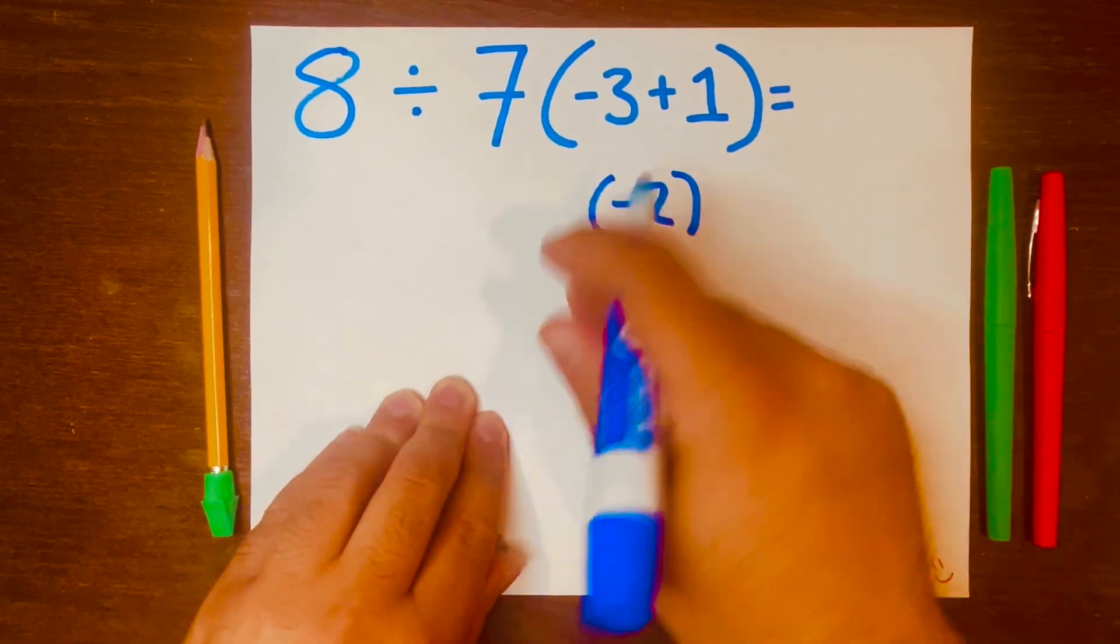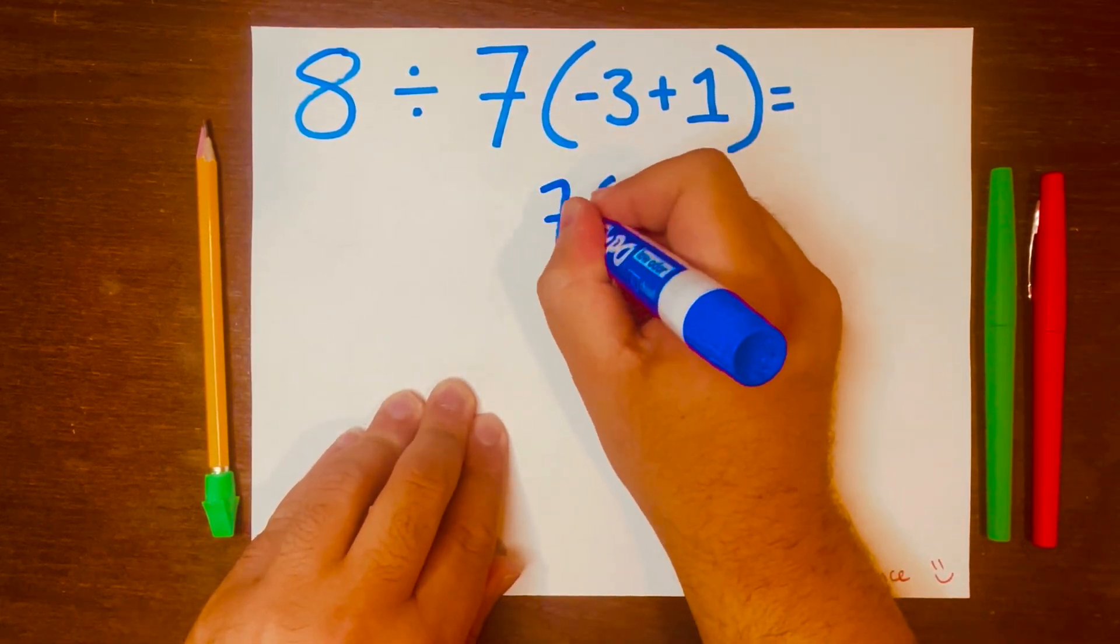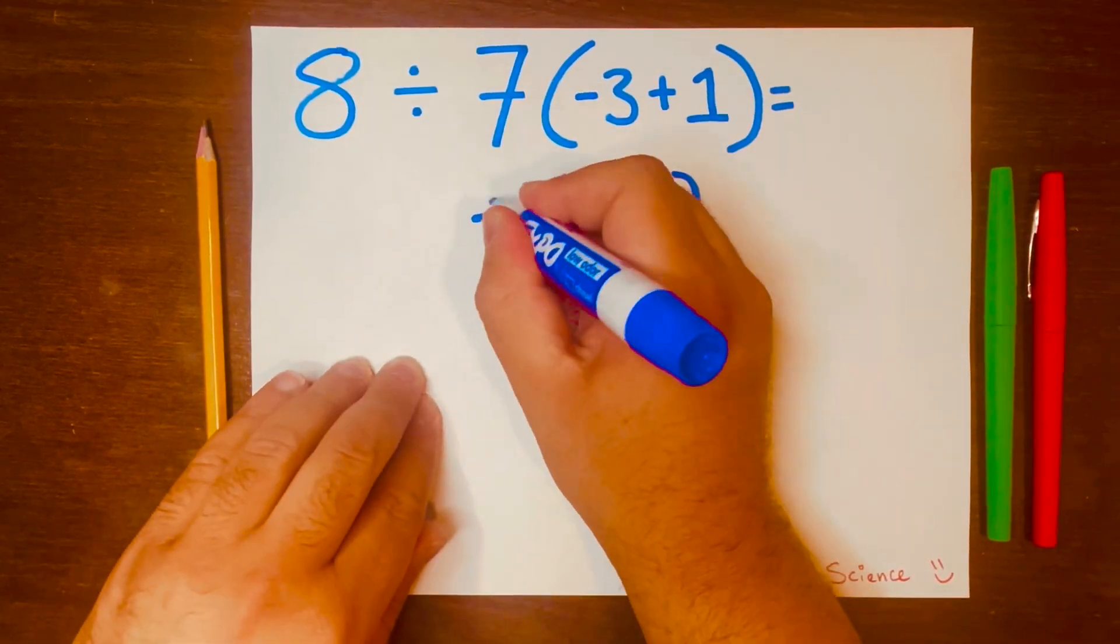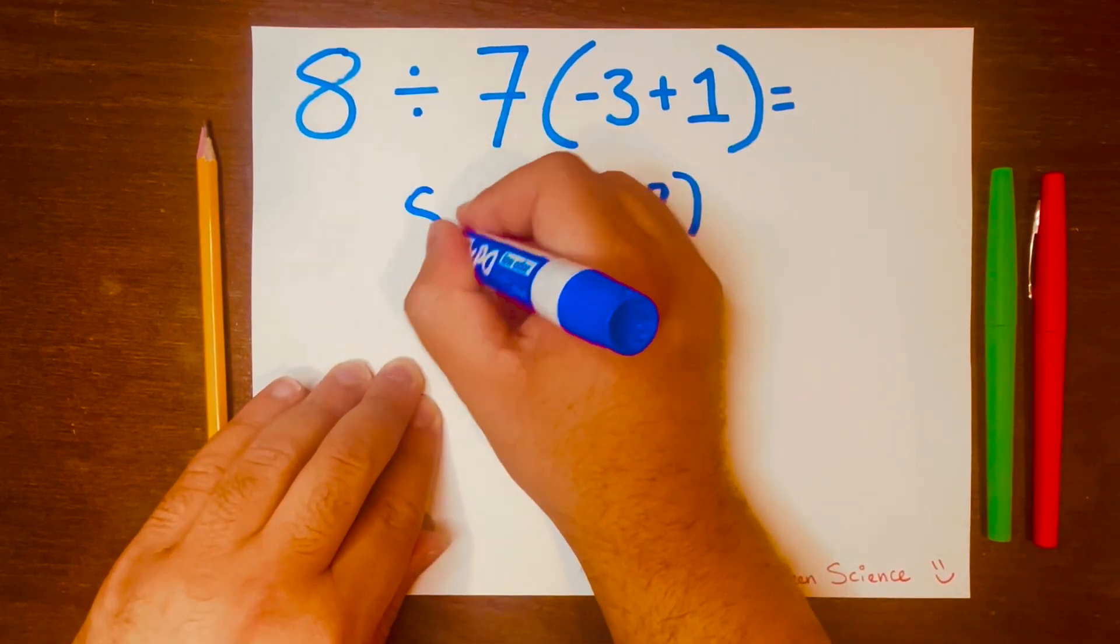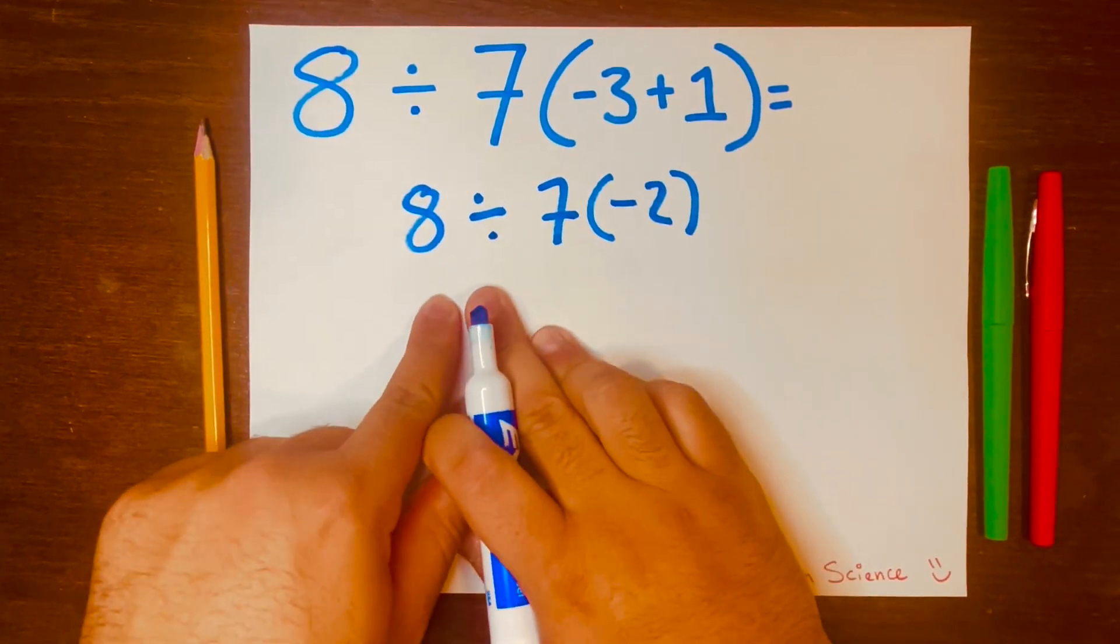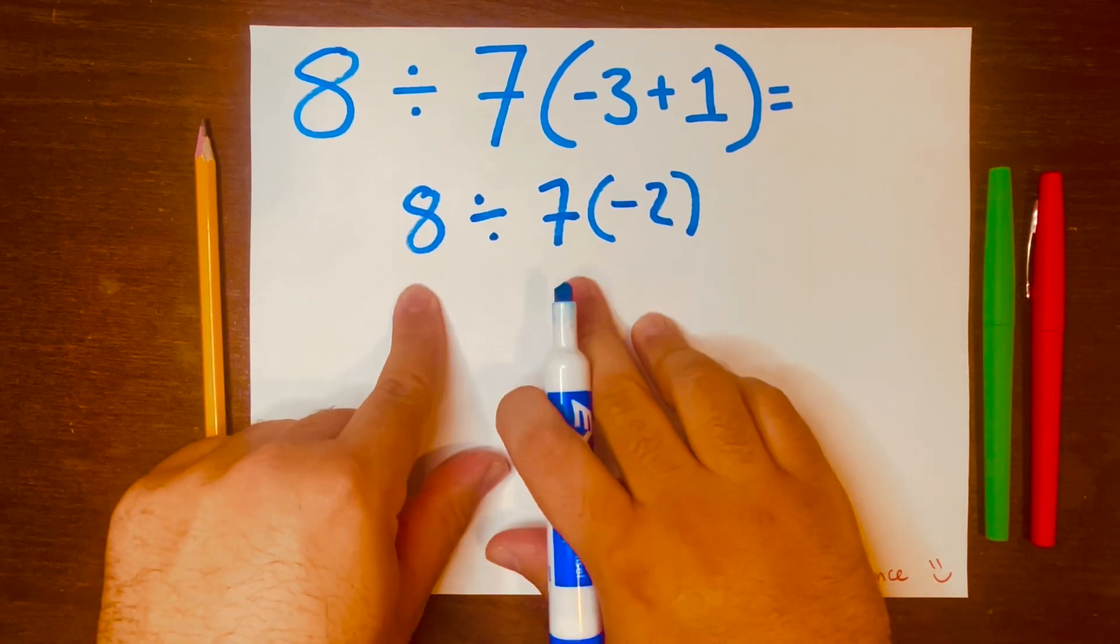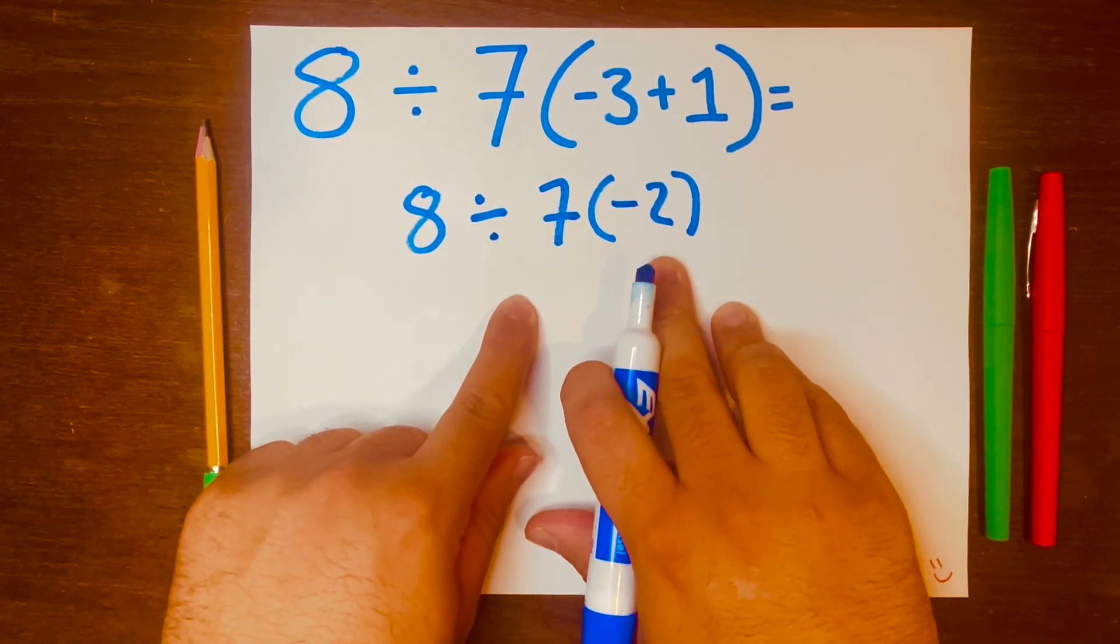Then I'll bring down the 7, the division symbol down, and then the 8 down. Now we have 8 divided by 7 times negative 2.